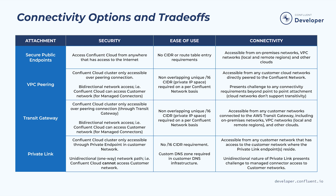AWS Transit Gateway builds on a peering network. It only works in AWS, but it removes the requirement for one-to-one peering connections. It also makes connectivity to other cloud environments or even your data center much easier.